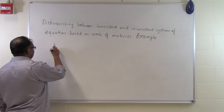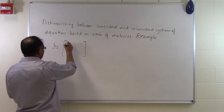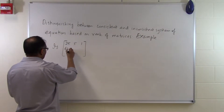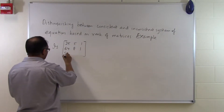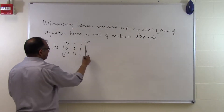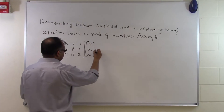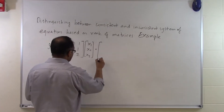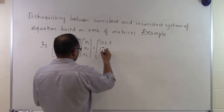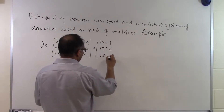The problem statement is: is this set of equations — with coefficient matrix [25, 5, 1; 64, 8, 1; 89, 13, 2] and unknown vector [x1, x2, x3] — equal to [106.8, 177.2, 280.0] consistent or inconsistent?